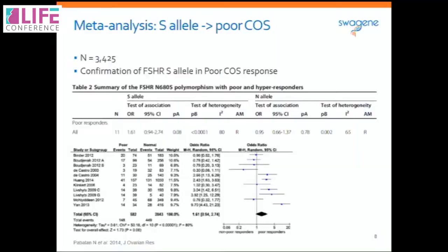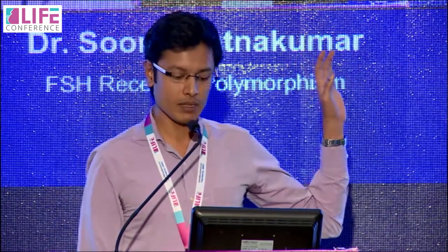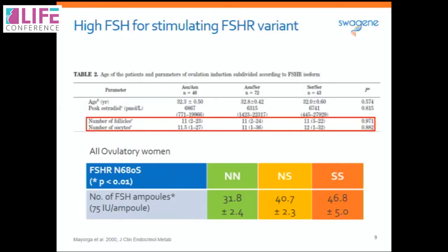Over the last 20 years there have been several papers on FSH receptor genetic variation, including meta-analyses showing a 61% increase in poor response among women carrying this variation. As one example, authors managed to achieve equal numbers of follicles and oocytes across women with and without the genetic variation — but what is striking is that women with one variant copy required significantly increased amounts of FSH to achieve the same response as wild-type women, and women with two variant copies required even higher doses.